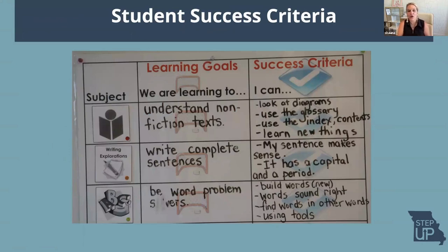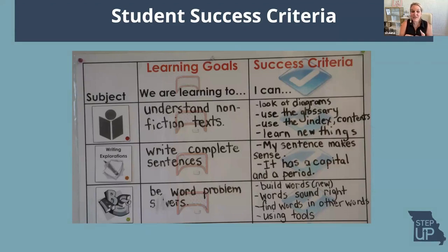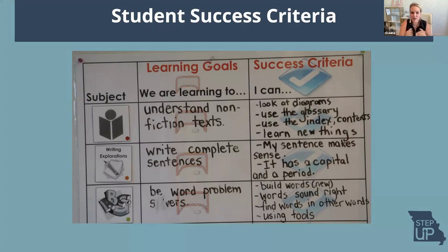Another example: people have taken this a step further. Here's the learning goal and here are examples of how a teacher's broken that out. If you think you understand nonfiction texts, here are the four things you should be able to do: look at the diagrams, use the glossary, use the index and contents. This idea that you would have clarity with students — looking at a teacher proficiency scale and talking with them about how do you know if you were successful. What does success really look like? You could even create an anchor chart with students about how we know if we're going to be proficient, and they can begin to say, 'I'm more of a two, I'm more of a three.'